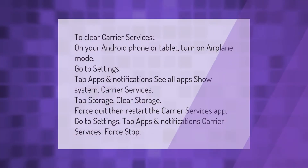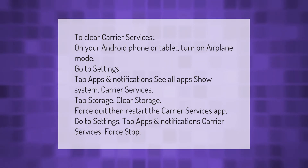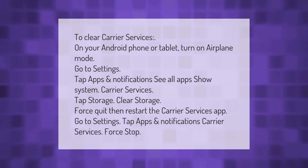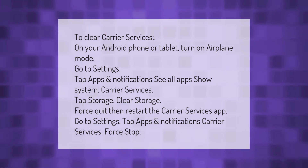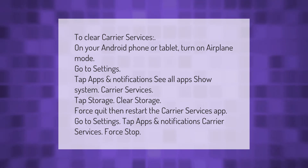To clear Carrier Services on your Android phone or tablet: turn on Airplane Mode, go to Settings, tap Apps and Notifications, see all apps, show system, Carrier Services, tap Storage, Clear Storage, then Force Quit. To restart the Carrier Services app, go to Settings, tap Apps and Notifications, Carrier Services, and Force Stop.